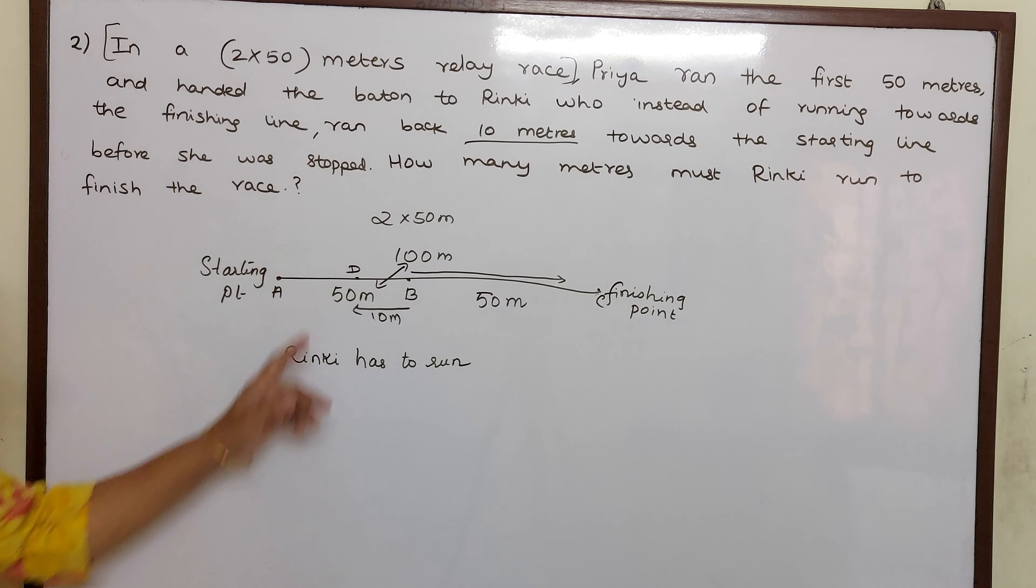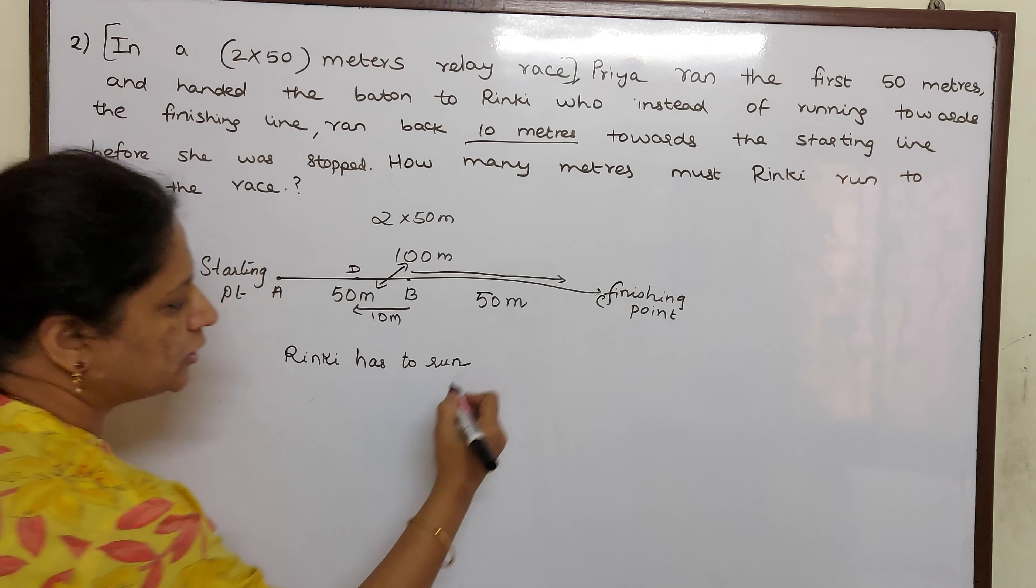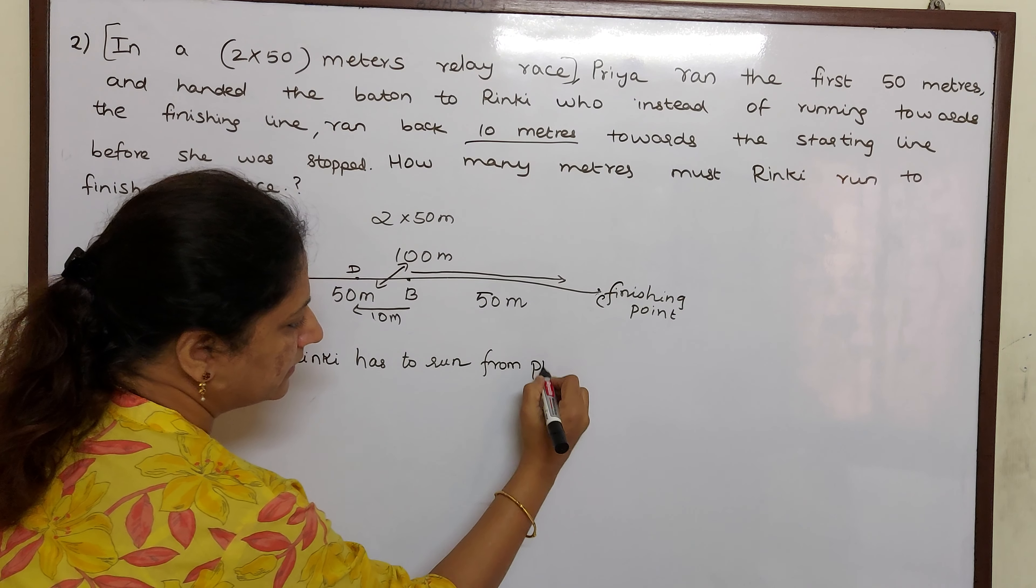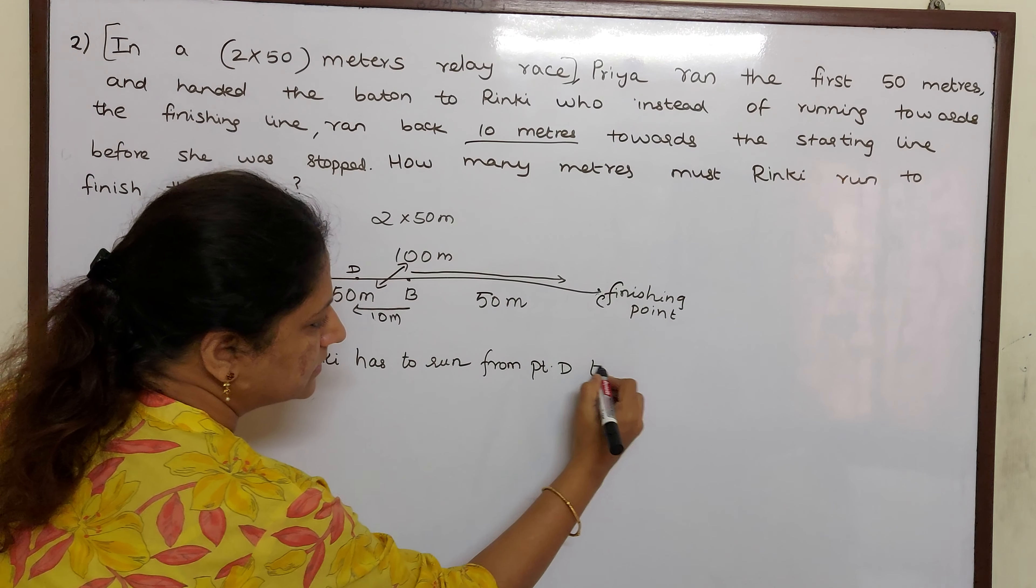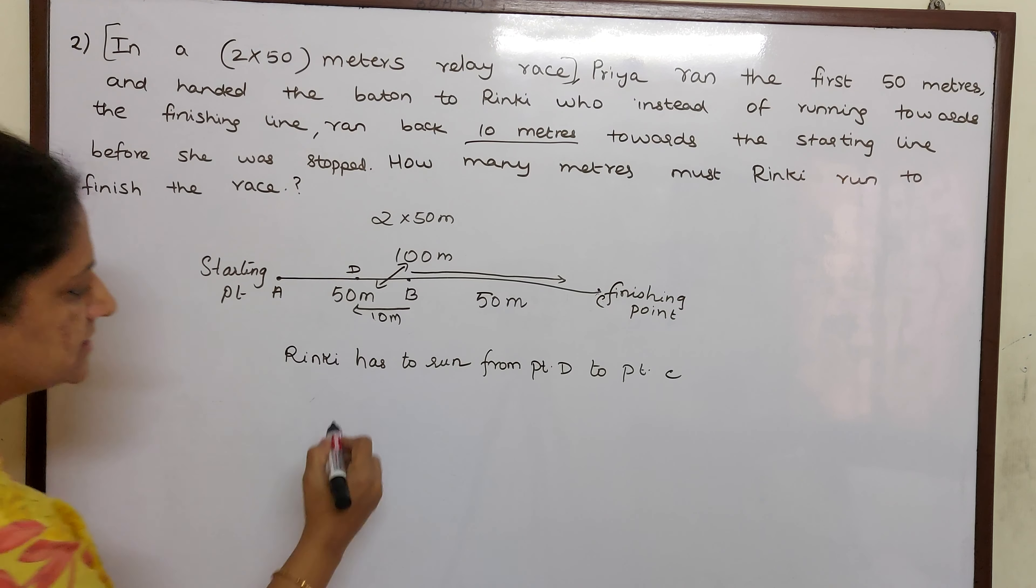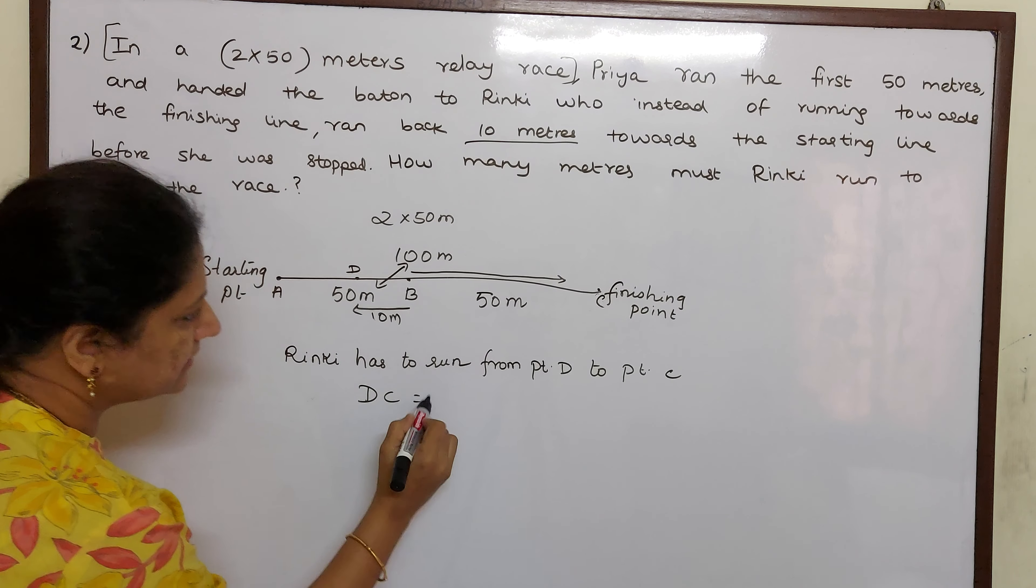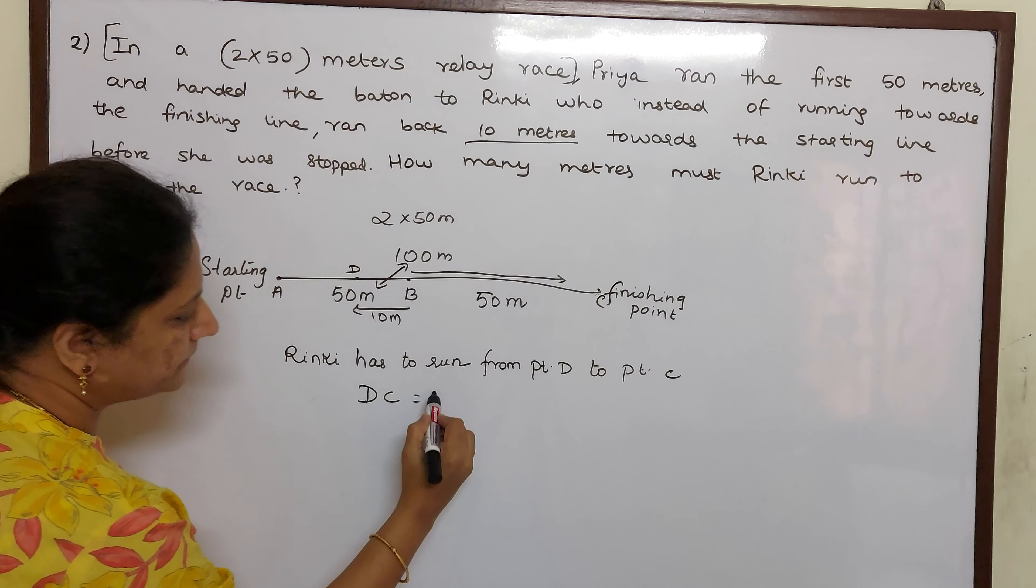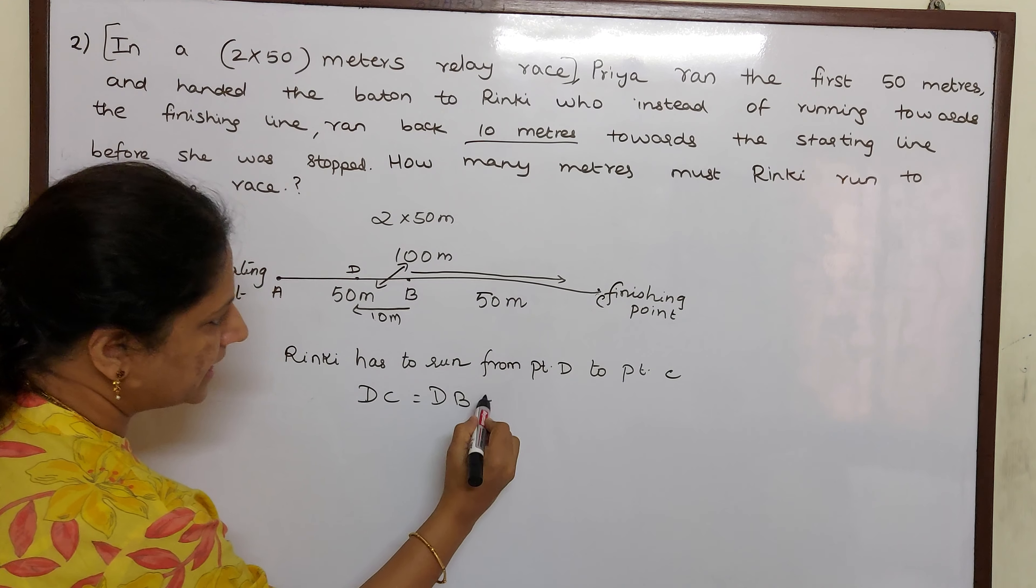Rinky has to run from point D to point C. So the distance between DC is, what is DC children? DC is DB plus BC.